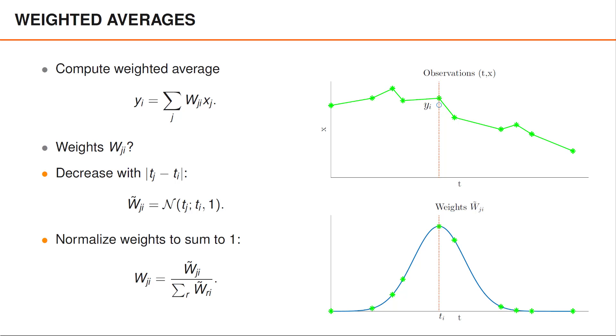This would imply that xi gets the largest weight, that the point just to the right of it gets the second largest weight, and that some of the points that are far away get a weight which is almost zero.